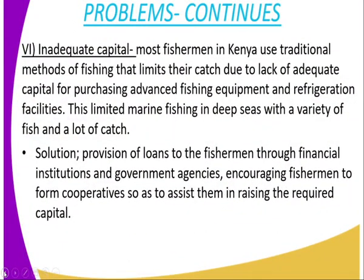Number six is inadequate capital. Most fishermen in Kenya use traditional fishing methods that limit their catch due to lack of adequate capital for purchasing advanced fishing equipment and refrigeration facilities. This limits marine fishing in deep seas where there is a variety and abundance of fish. The solution is provision of loans to fishermen through financial institutions and government agencies, and encouraging fishermen to form cooperatives to raise the required capital.